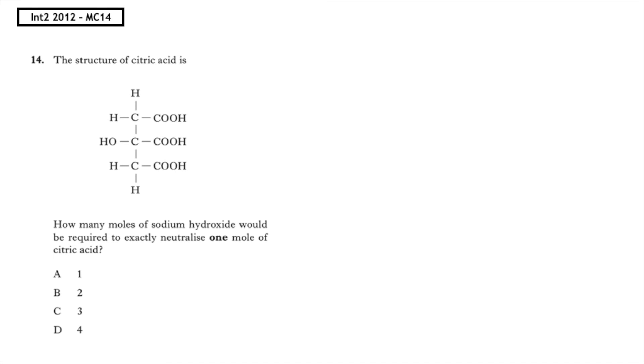This past paper question is from the Intermediate 2, 2012, multiple choice 14. The structure of citric acid is given. How many moles of sodium hydroxide would be required to exactly neutralize one mole of citric acid? If we look at the diagram of citric acid, we know it's acidic, so we're looking for the carboxyl group. On the right hand side we can see that we've got three carboxyl groups. We know that acids react with bases. If we've got three acid groups, how many bases can react? That would be three. So the correct answer to this question is multiple choice answer C.